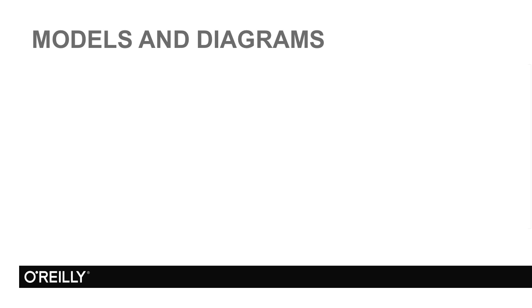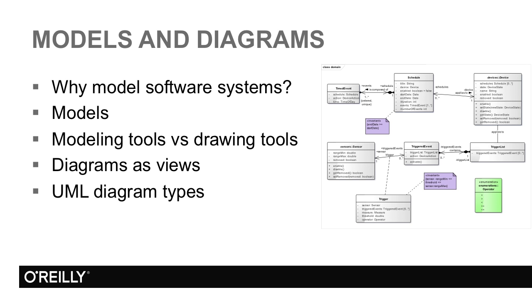In this movie I'm going to talk about models and diagrams and explain the difference between them. I'm going to start by giving some reasons why we model systems and then explain what we mean by a model. I'll contrast modeling tools with drawing tools and explain how diagrams are views of some aspect of a model. Finally I'll list the different types of diagram in UML which are classified as either structural or behavioral.